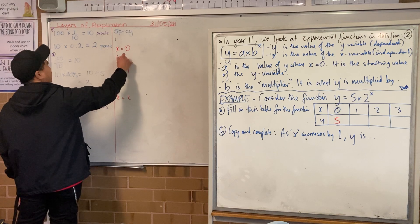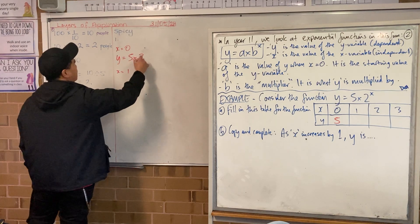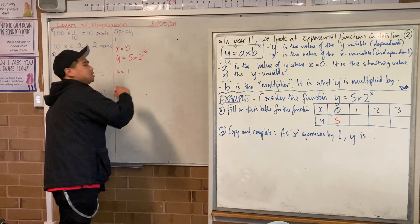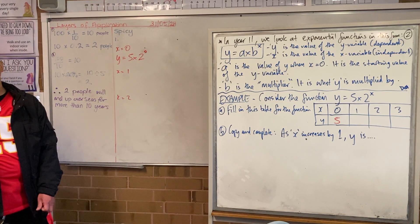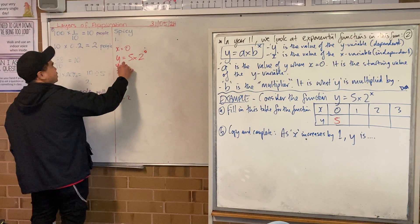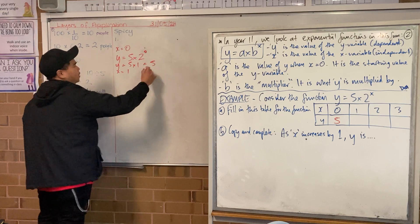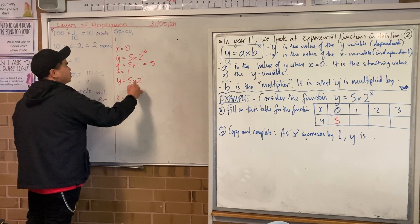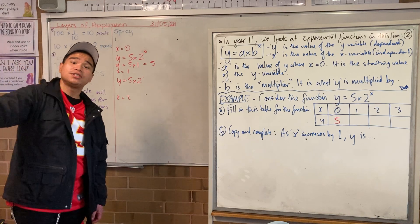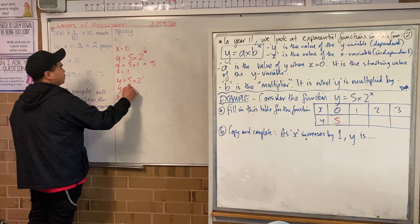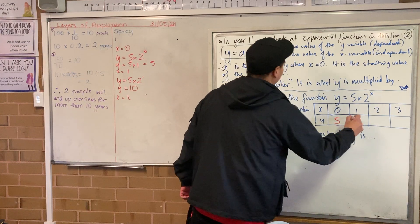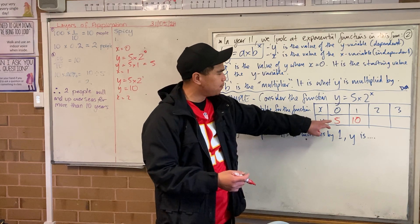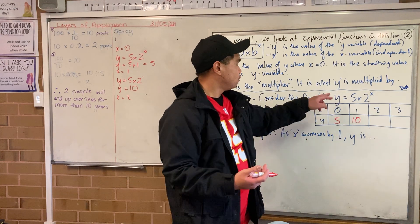If I have the function y equals 5 times 2 to the power of x, and x is 0, what is anything to the power of 0? So y equals 5 times 1, which is 5 — which is what we've got. Now let's do x equals 1: y equals 5 times 2 to the power of 1. Anything to the power of 1 is itself, so 5 times 2 is going to be 10. Does that fulfil what I said about b? b is the multiplier — what did I just multiply y by to get this number? 2. The multiplier is 2.